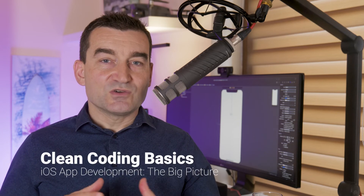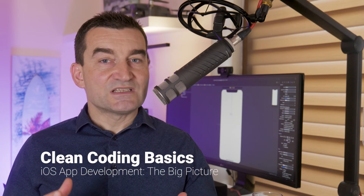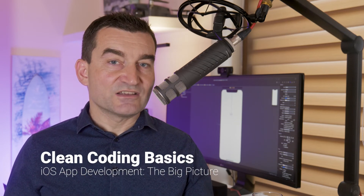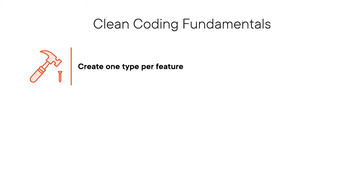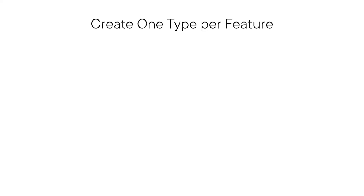In this video, I'll show you a few fundamental coding principles that will help you write cleaner code. First, make sure you design your types around a single, well-defined responsibility. Adhering to this rule alone will improve your code tremendously. Assigning too many features to a type can lead to massive, monolithic classes. Such classes contain a lot of code, making it challenging to fix bugs or implement new features. Instead, we create one type per feature.